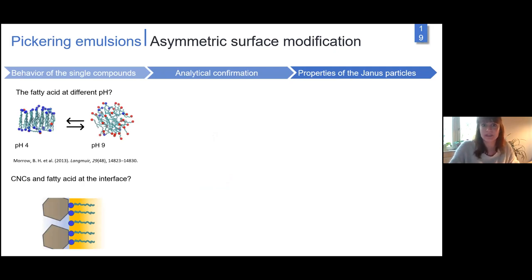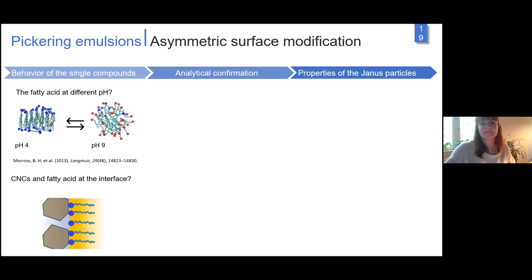This is interesting and promising, but how is this possible? If we have all OH groups immersed in the water phase, we shouldn't have reactivity of OH groups from the oil side. The system is even more complex than end-wise modification. With this esterification reaction, we first have to understand the behavior of single compounds. What does our fatty acid do at different pH values? It forms bilayers in acidic pH and micelles in basic pH. But we have dissolved fatty acid in dodecane. Does this fatty acid, together with the CNCs, absorb to the interface? This absorption together with CNCs might create a reaction environment.